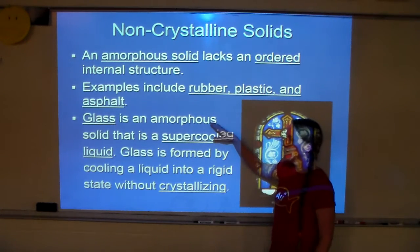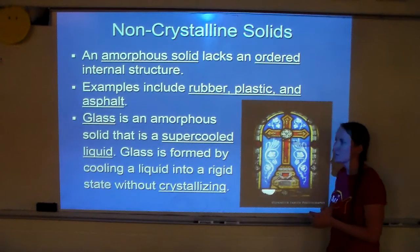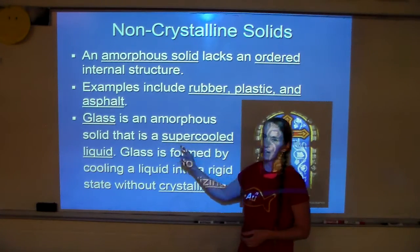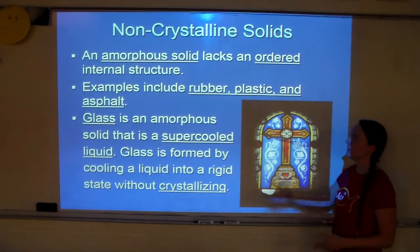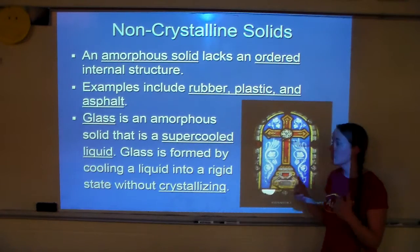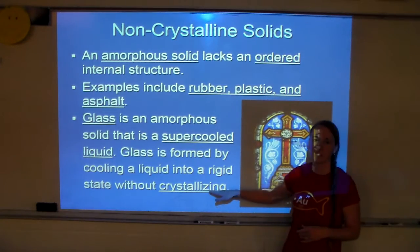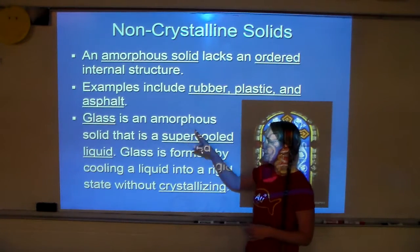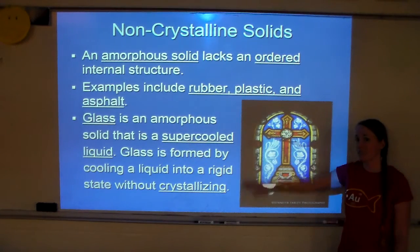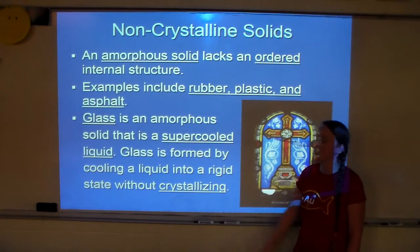Glass is an amorphous solid that is a super cooled liquid. On the test, there's often a question about what glass is, and the answer is both — it is an amorphous solid that lacks an ordered internal structure, but it was a super cooled liquid, cooled in a way that allowed it to become rigid without fully crystallizing. Glass is really cool, but we don't have time to cover all of it right now.